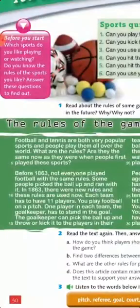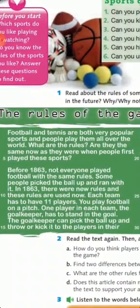Football and tennis are both very popular sports and people play them all over the world. What are the rules? Are they the same now as they were when people first played these sports? Before 1863, not everyone played football with the same rules. Some people picked the ball up and ran with it — that was before 1863, when there were no specific rules. Some people took the ball with their hand and ran with it.